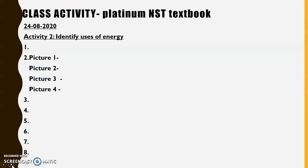Class activity — this is in your Platinum textbook on page 110. The activity is Activity 2 and the heading is 'Identify Users of Energy.' Question 1 says look at pictures 1 to 4 — this is an instruction, so once you're done you may write 'done' or leave it blank. Question 2 says match each picture with one of the statements below.